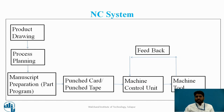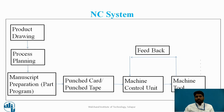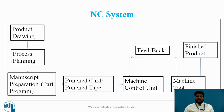In the machine tool, there is a system which checks the position of the workpiece and the velocity of the spindle, then gives feedback back to the machine control unit. Again, signals are passed to the machine tool and finally the product is completed. So in the NC system, the main part is the punched cards and punched tapes.